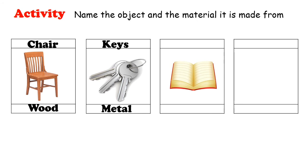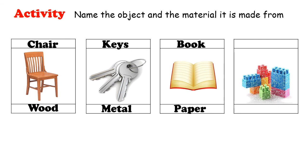Let us look at the third picture. What object is this? This is a book — very good. The object is the book. Which material is making the book? Paper — excellent.